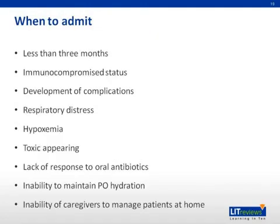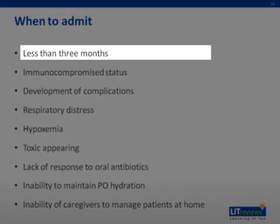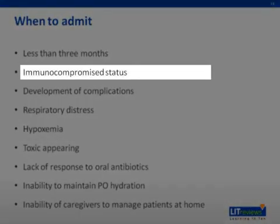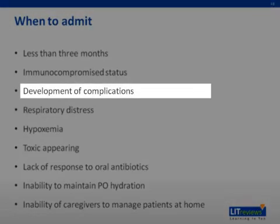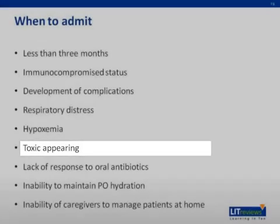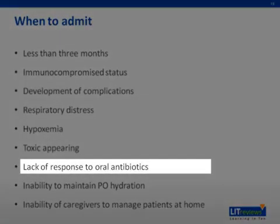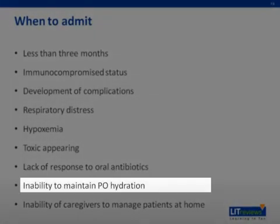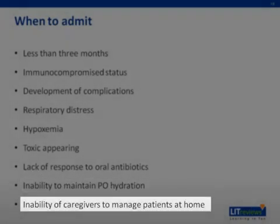As you think about admitting these patients, the concern comes in with several aspects of the patient history and their current state. Usually, a patient less than three months of age is admitted to the hospital for monitoring and care. A patient with a history that would make you cautious of an immunocompromised state will also need to be admitted. The development of complications, respiratory distress, hypoxemia, and a toxic-appearing patient warrant an admission to the hospital. If the patient has a history of lack of response to oral antibiotics necessitating IV antibiotics, along with an inability to take PO and concern about the caregiver's ability to help the patient, prompt admission for IV therapy is indicated.